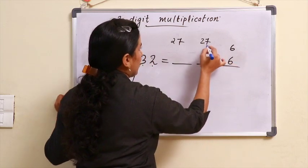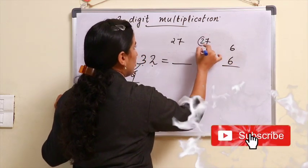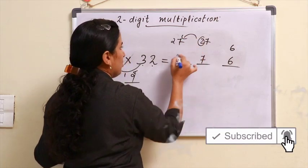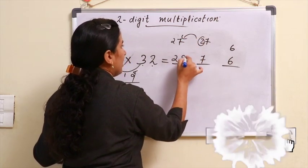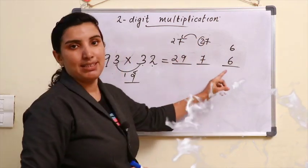27, carry over here. 7, carry over here. 27 plus 2 gives us 2976.